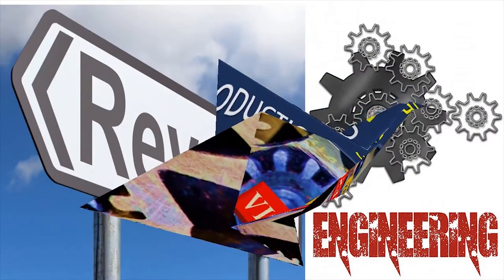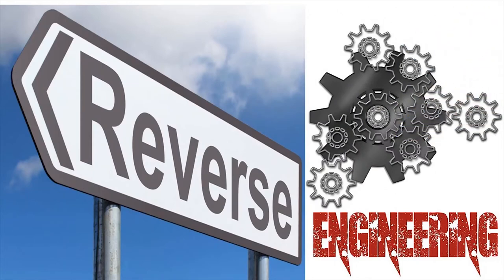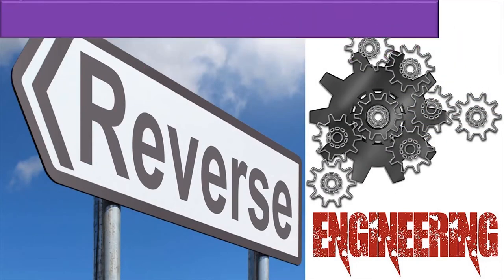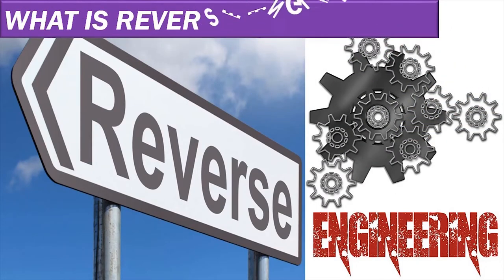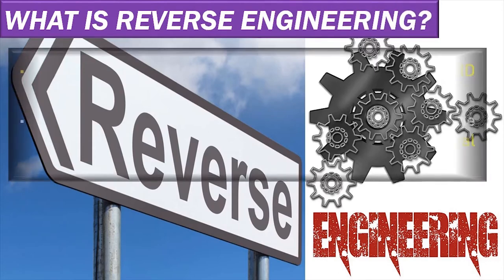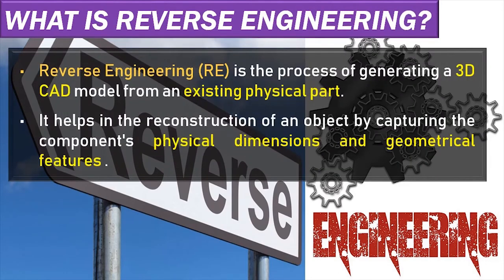So first, what is reverse engineering? Reverse engineering applies when we have a physical part and the physical part does not have a design diagram. So the physical part becomes the starting point rather than a design diagram. That is reverse engineering. Once we have a drawing, we will manufacture the component. But this is in reverse order — there is a part, and from it we create a design drawing.